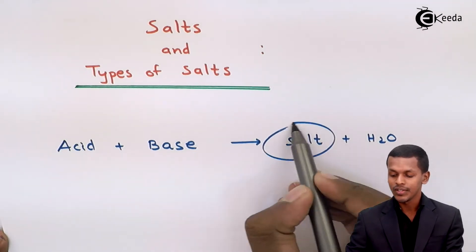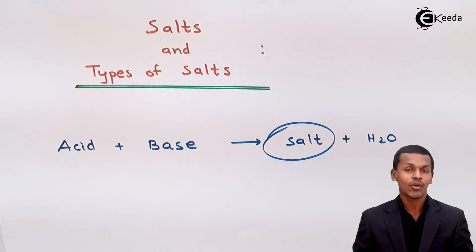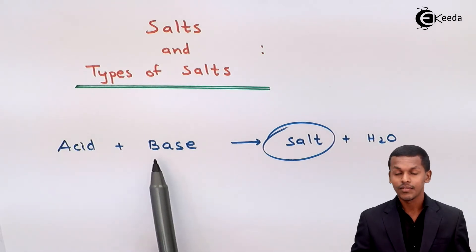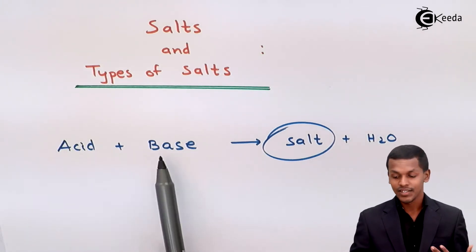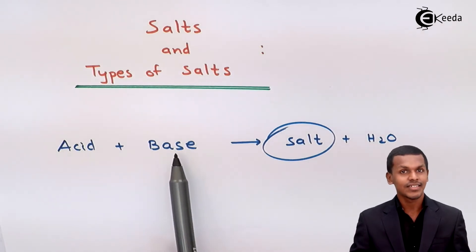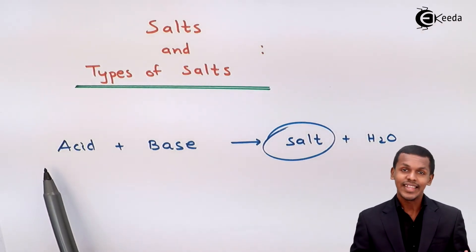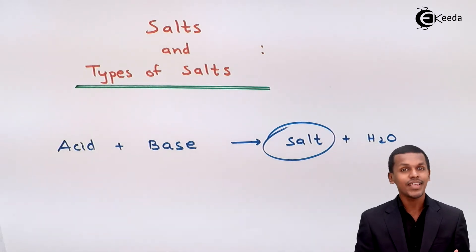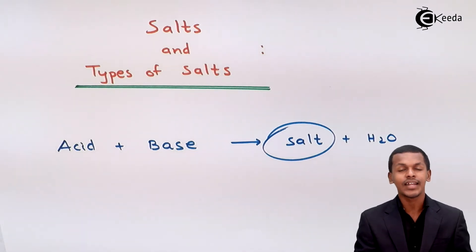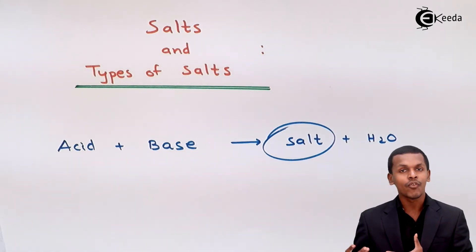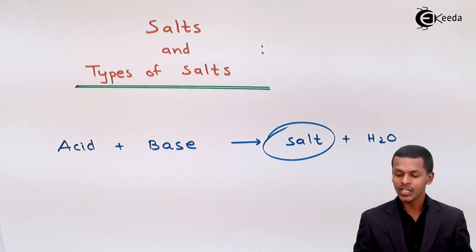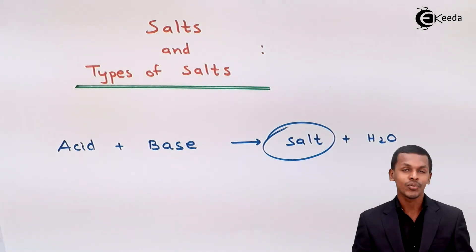During the neutralization of an acid and base, salt and water are produced. Salt can be produced from a strong acid and strong base, a strong acid and weak base, a weak acid and strong base, or a weak acid and weak base. This makes salts originate from different combinations of acid and base, and that is the reason salts are divided into four categories.